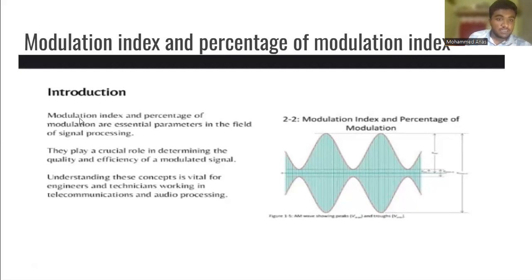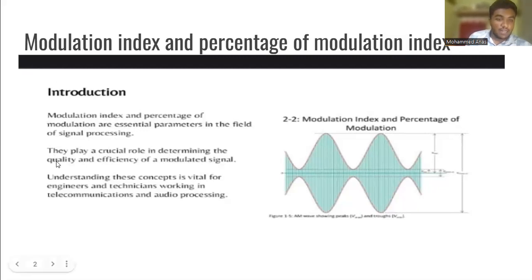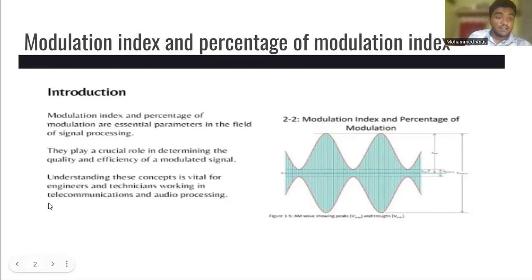In introduction, modulation index and percentage of modulation are essential parameters in the field of signal processing. They play a crucial role in determining the quality and efficiency of a modulated signal. Understanding this concept is crucial for engineers and technical workers in telecommunications and audio processing.